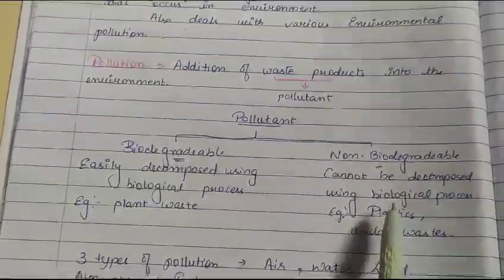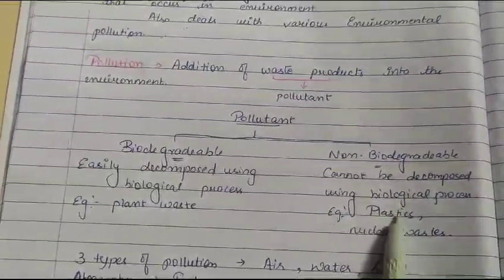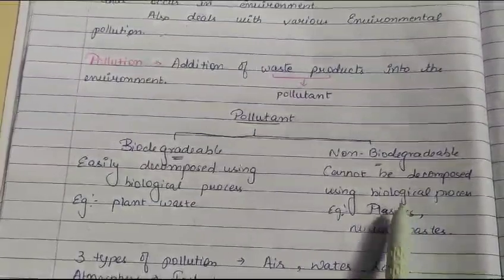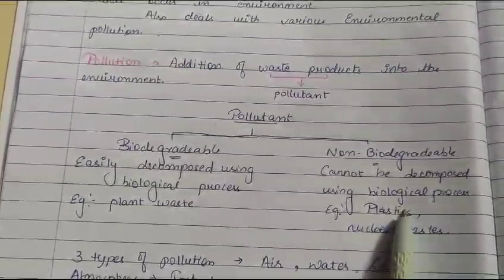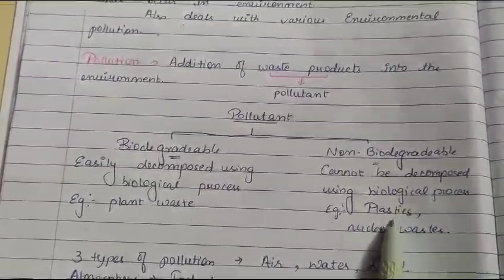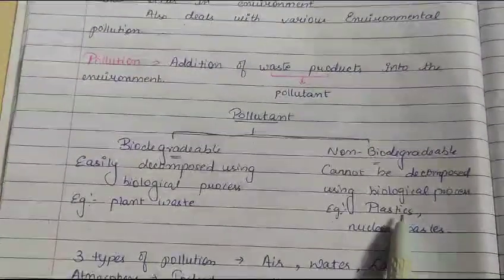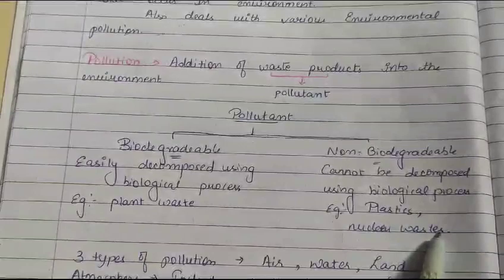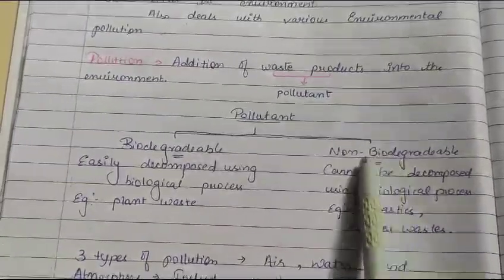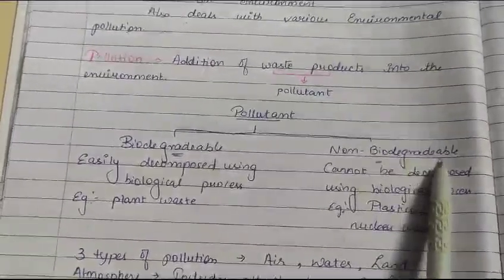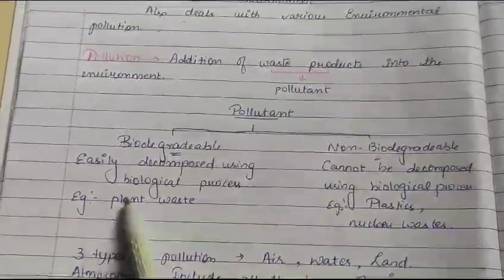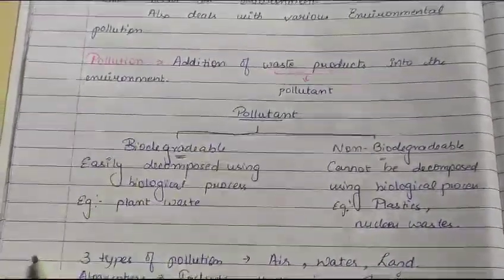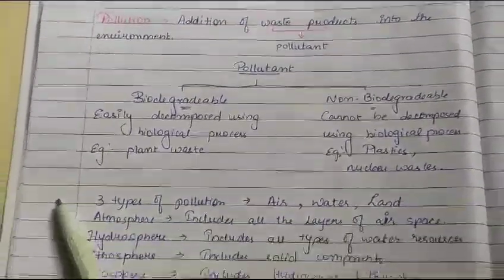Non-biodegradable pollutants include, for example, plastic. Plastic takes around 100 years to degrade. Nuclear waste is also non-biodegradable. Plant waste, on the other hand, is biodegradable.